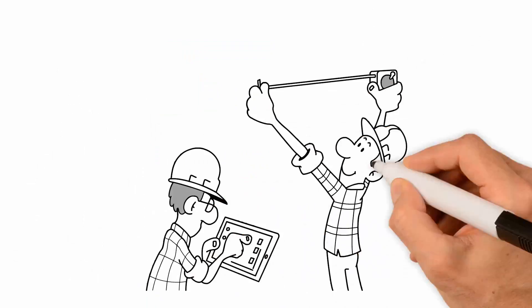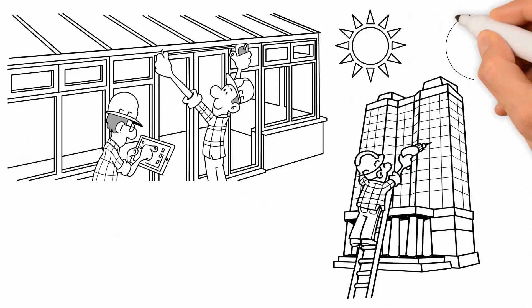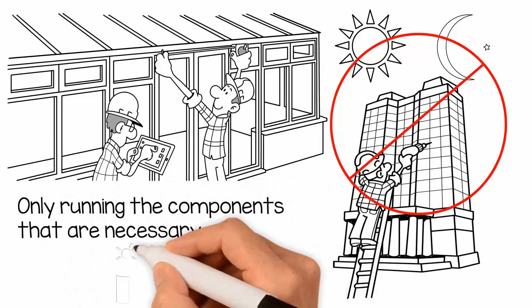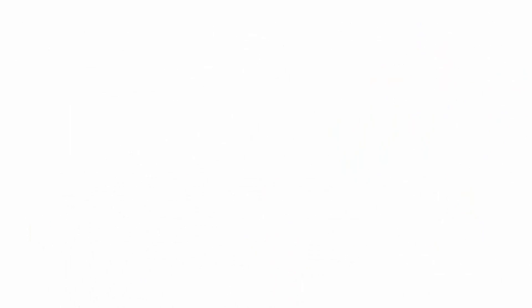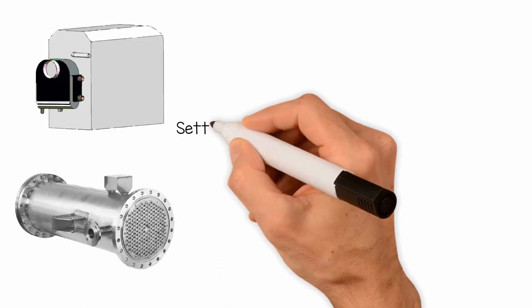Procedures and tips for optimizing your BAS include not starting the system too early in the morning or shutting it off too late in the evening, only running the components that are necessary to heat and cool the building efficiently, and utilizing free cooling with devices like economizers and heat exchangers.